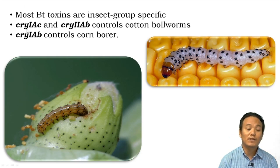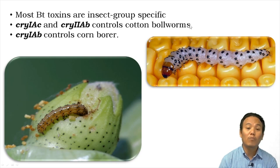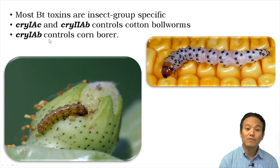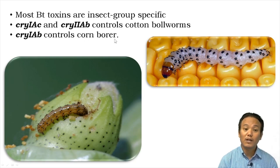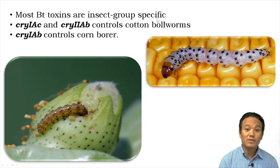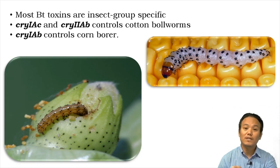For example, scientists isolated cry1AC and cry2AB genes from the bacteria and inserted them into cotton plants, making the cotton plant resistant to cotton bollworms, which are Lepidopterans. Scientists also isolated the cry1AB gene and inserted it into corn plants, making the corn plant resistant to corn borers, which are Coleopterans. This insect-group specificity is a very important property useful for creating GM crops resistant to specific insect groups, killing only the specific pest and not other insects.